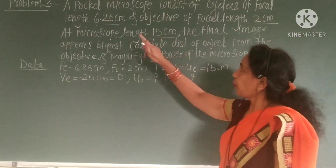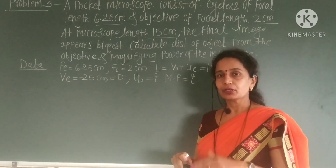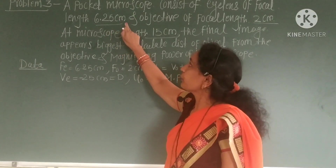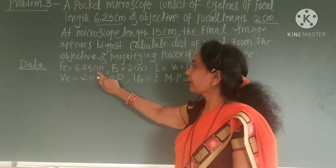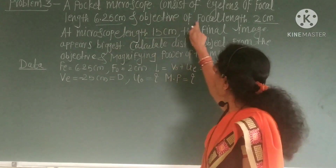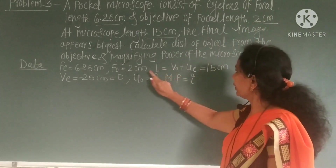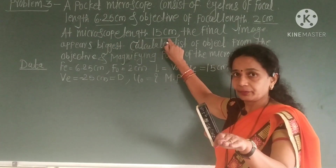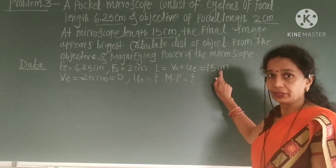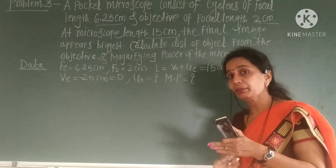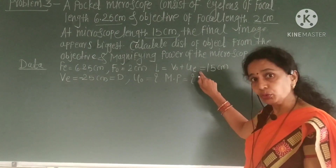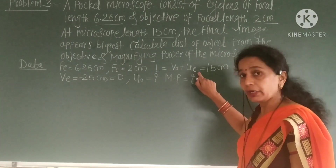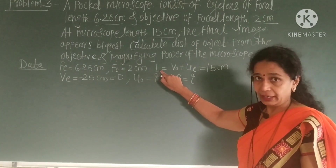Third problem: a compound microscope used by students consists of an eyepiece of focal length Fe equals 6.25 cm and an objective of focal length Fo equals 2 cm. The microscope length capital L equals 15 cm, which is the distance between objective and eyepiece, i.e., Vo + Ue equals 15 cm. We need to find Uo and the magnifying power.